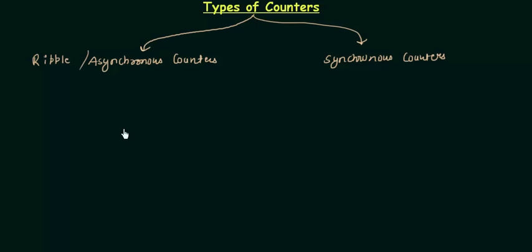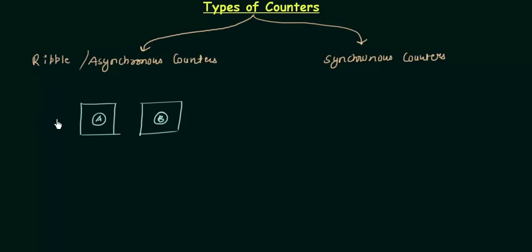Let's say I have a counter which consists of two flip-flops: flip-flop A and flip-flop B. The external clock signal is applied to flip-flop A, and the output of this preceding flip-flop, QA, is connected to the clock of the next flip-flop B. You can also have three or four flip-flops. So the clock is given to flip-flop A and then the output of flip-flop A acts as the clock of flip-flop B. This is what you need to remember about asynchronous or ripple counters.